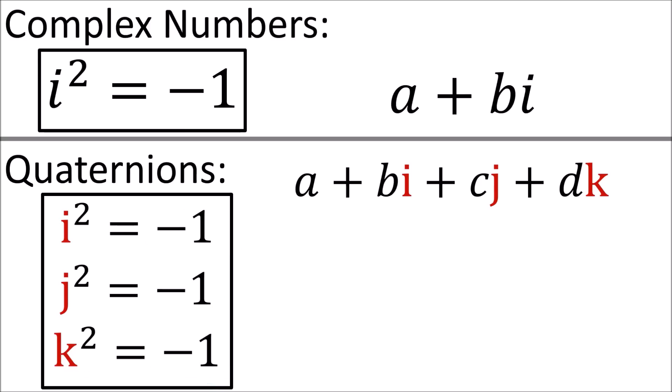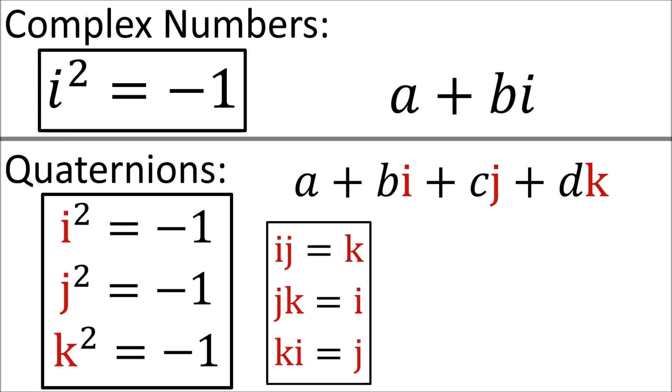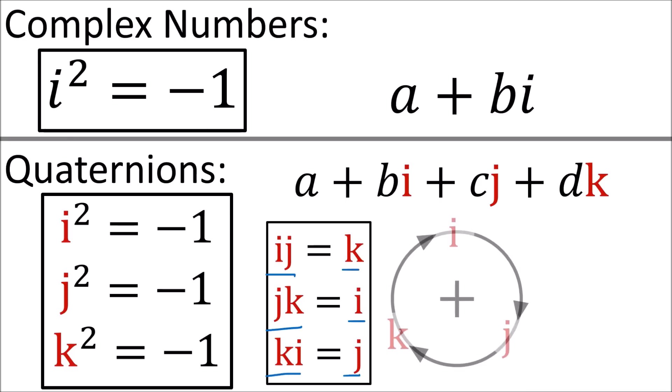Now with quaternions, it's not enough to know that the imaginary units square to minus 1. We also need to know how they multiply with each other. The standard multiplication rules are: i times j equals k, j times k equals i, and k times i equals j. We can visualize these multiplication rules by following the arrows on a circle.